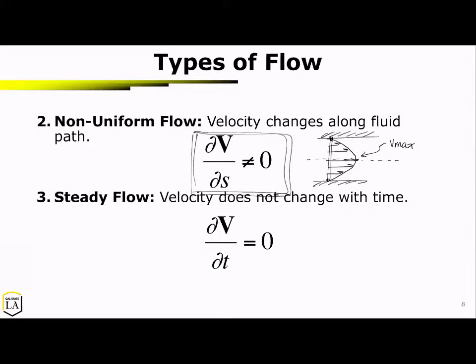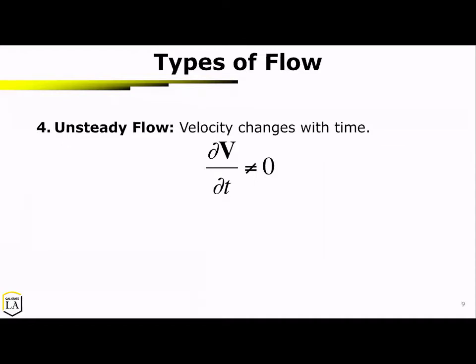The third type of flow is steady flow, which means that the velocity is not changing with respect to time. This is a wonderful approximation that simplifies a lot of our work when we get into the Reynolds Transport Theorem. The other side of that is unsteady flow, which means that velocity is changing with respect to time.